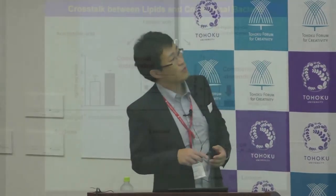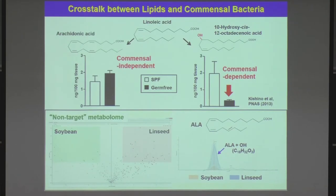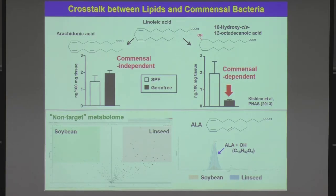We are now trying to identify new chemical compounds derived from and mediated by commensal bacteria using non-target metabolome analysis. Recently we found that some lipid metabolites derived from ALA and generated by commensal bacteria have good anti-inflammatory activities and can also prevent the development of diabetes. We are now studying how those lipid metabolites affect host immune responses, which is another one of our ongoing projects.